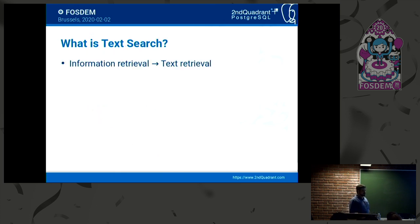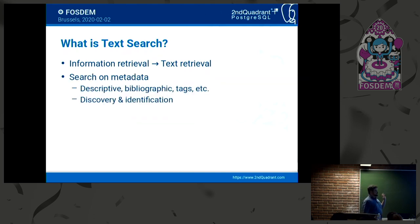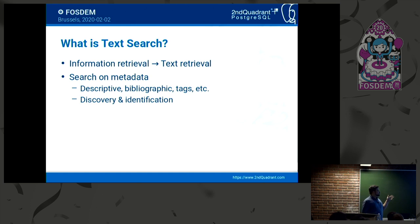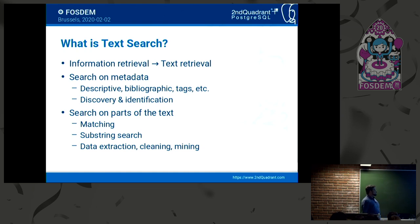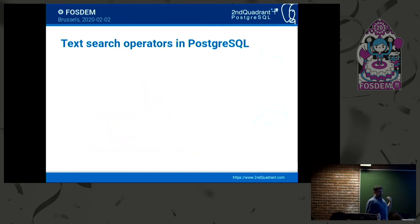So what is text search? We're talking here about information retrieval and more specifically text retrieval. This is a well-known domain. We mainly use it for searches on metadata, which can be descriptive or bibliographic — there can be tags, tagging objects — and it's used for discovery and identification. When you're talking about text search and text matching, you're not trying to identify web pages or articles through their content; you're looking at metadata fields and trying to match words out of the whole thing. So: matching, substring search, data extraction — it's useful for cleaning data and data mining. These are the supported operators in Postgres for this sort of thing.